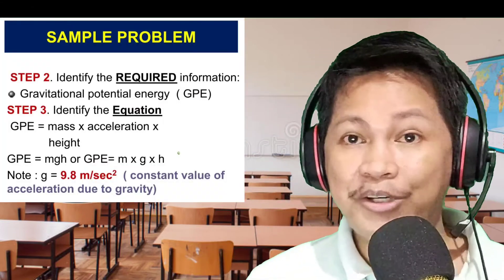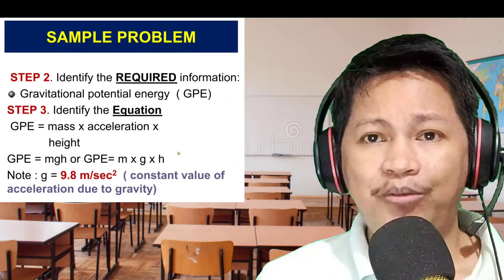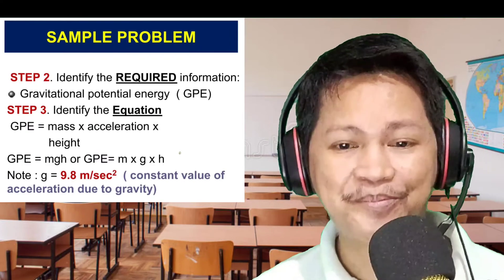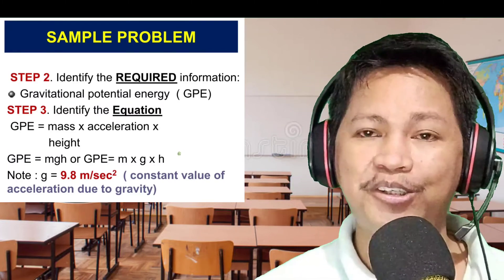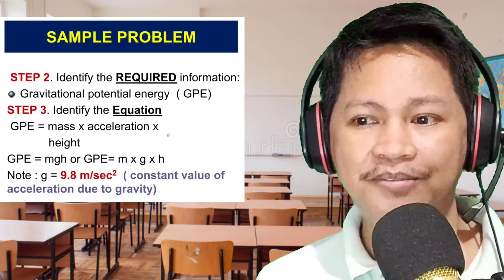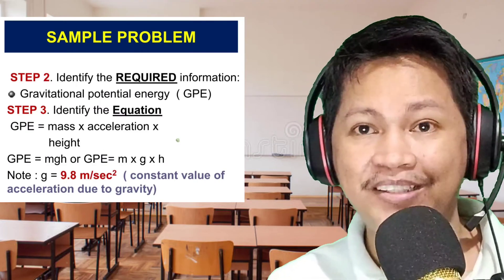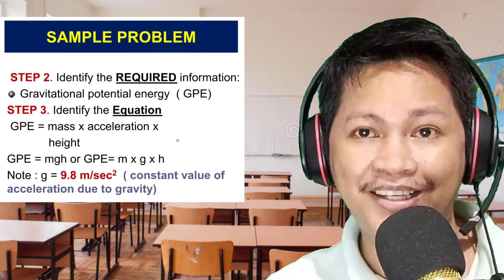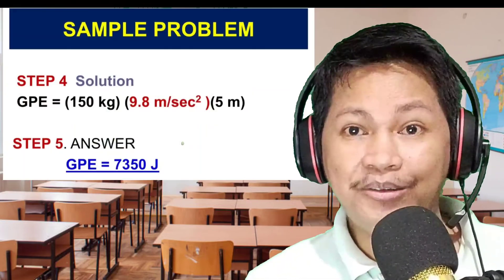Step two: identify the required information — what is the problem asking? We are asked to find the gravitational potential energy. Step three: use the equation. Since we are asked to find GPE, we use GPE = mass times acceleration due to gravity times height, or mgh. Remember, the acceleration due to gravity is always constant on Earth at 9.8 meters per second squared.